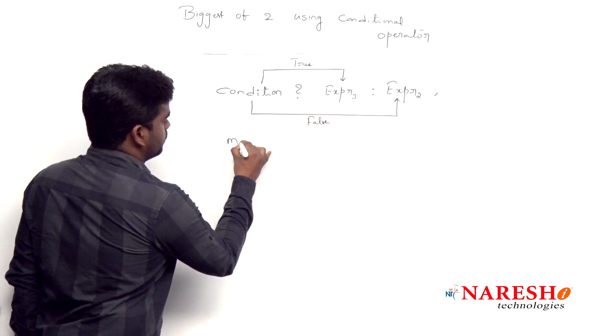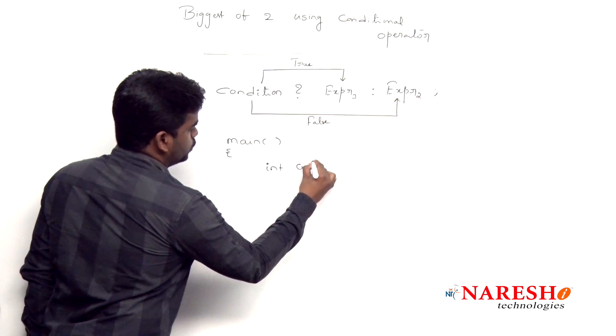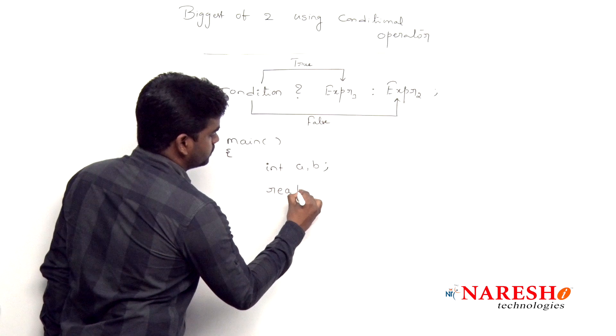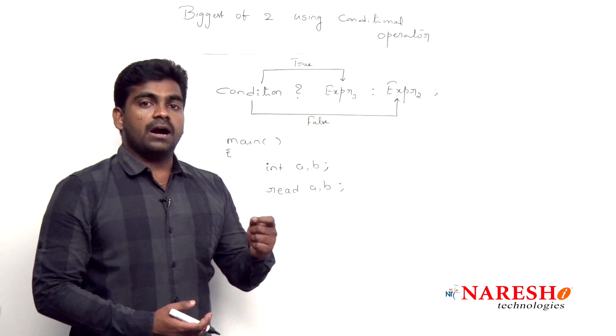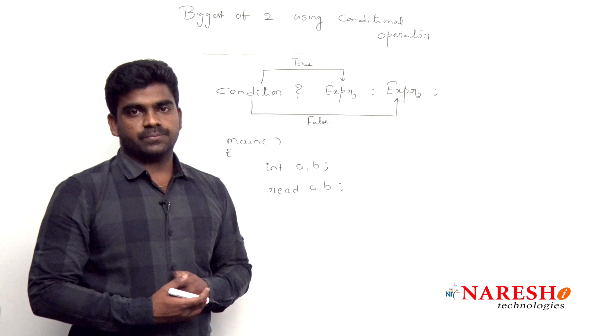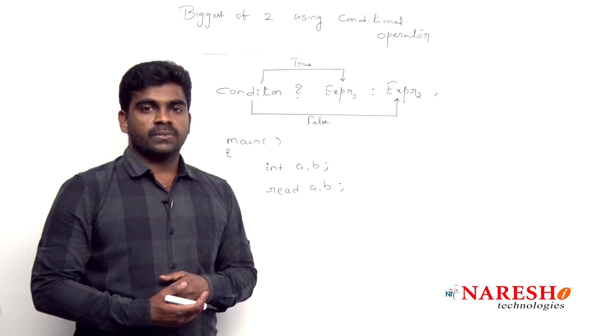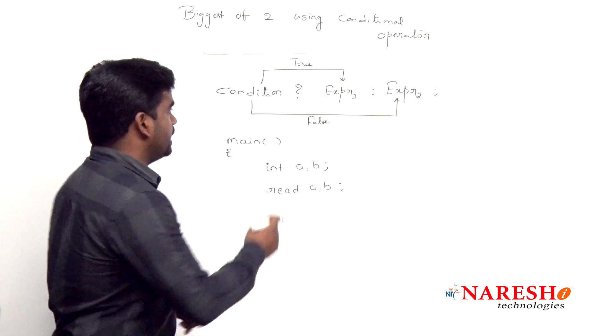Here it is main. First we are declaring two variables, two variables a and b, and next we are reading two variables a comma b. Now after reading the two variables, now we need to find out the biggest one using conditional operator.